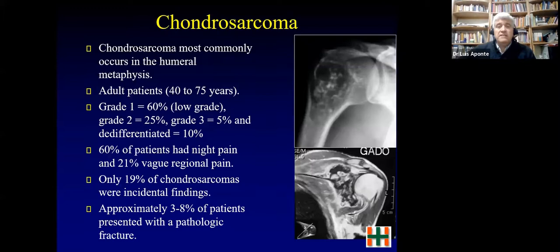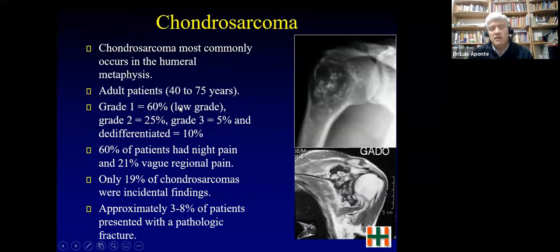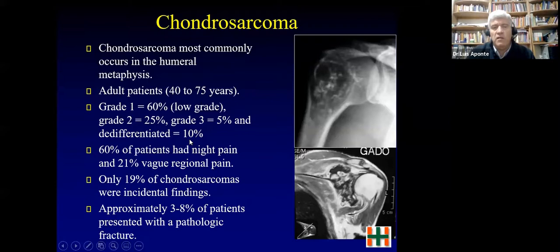Chondrosarcoma, the last bone tumor we will discuss, occurs mainly in adult patients over 40 years. There are three grades: low grade (now called intermediate grade) is the most common; grade two and grade three are less common; and the dedifferentiated type, though only 10%, is a very aggressive tumor. Patients often have night pain, 20% are incidental findings on X-ray, and some present with pathologic fracture. You must follow patients with a history of enchondroma carefully.